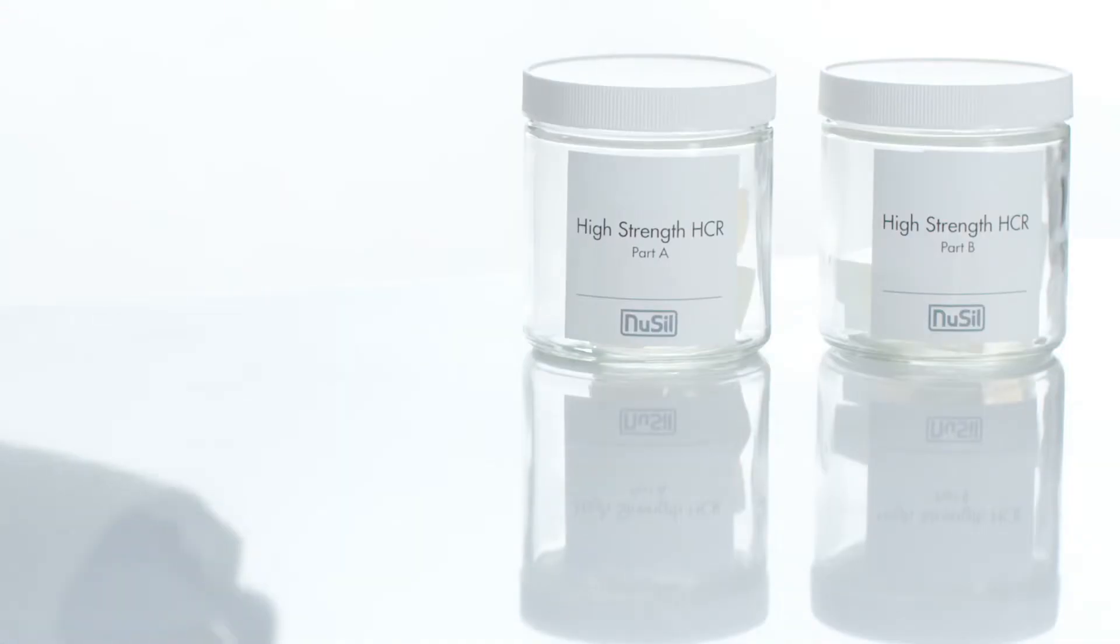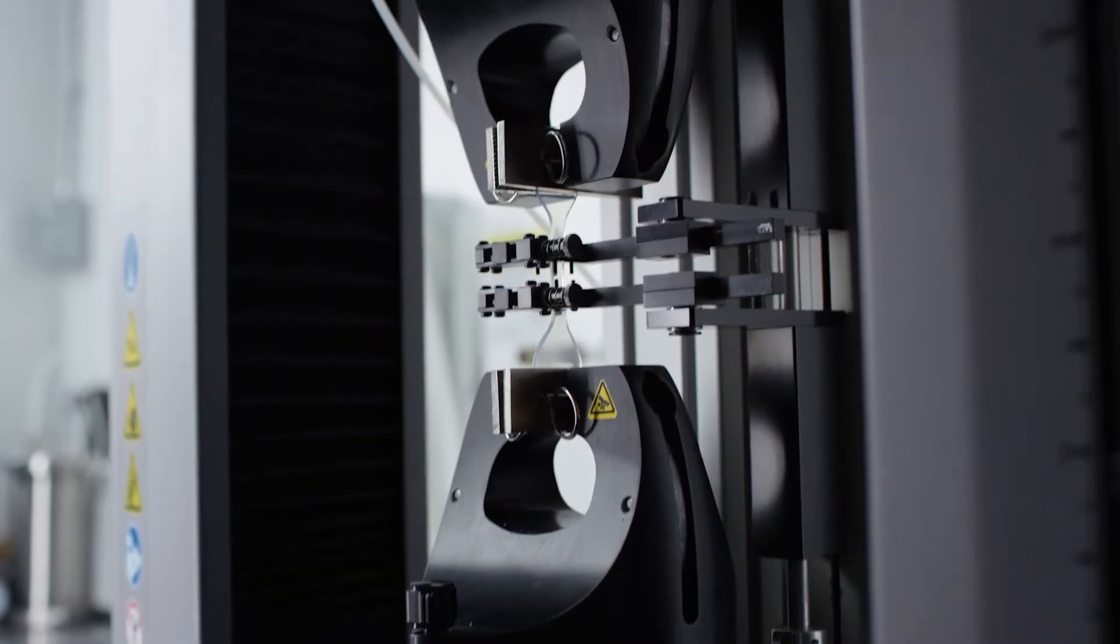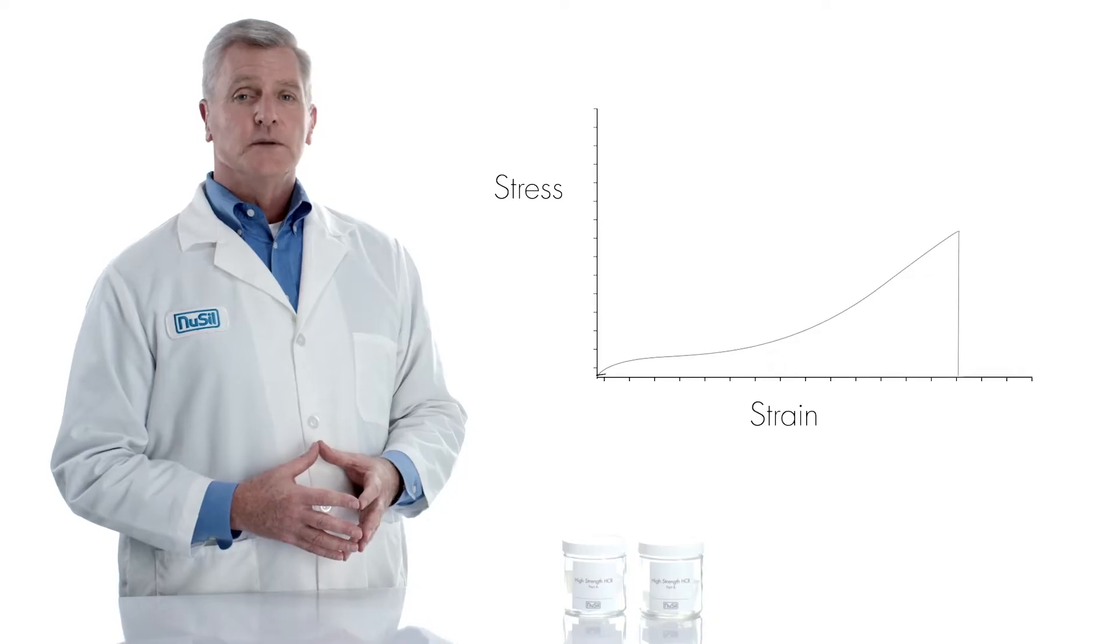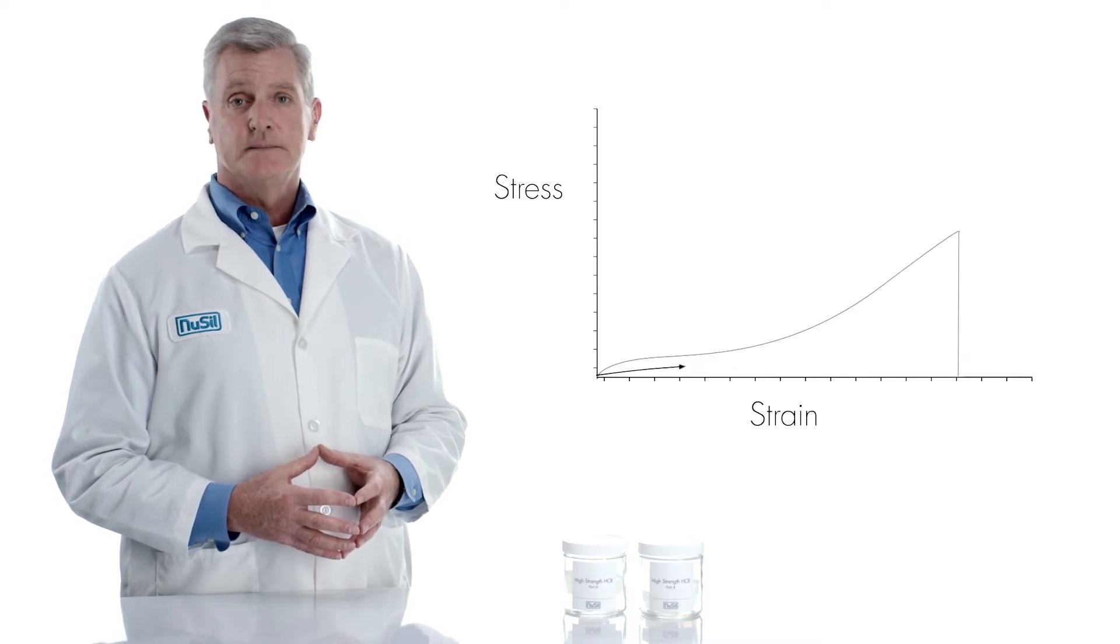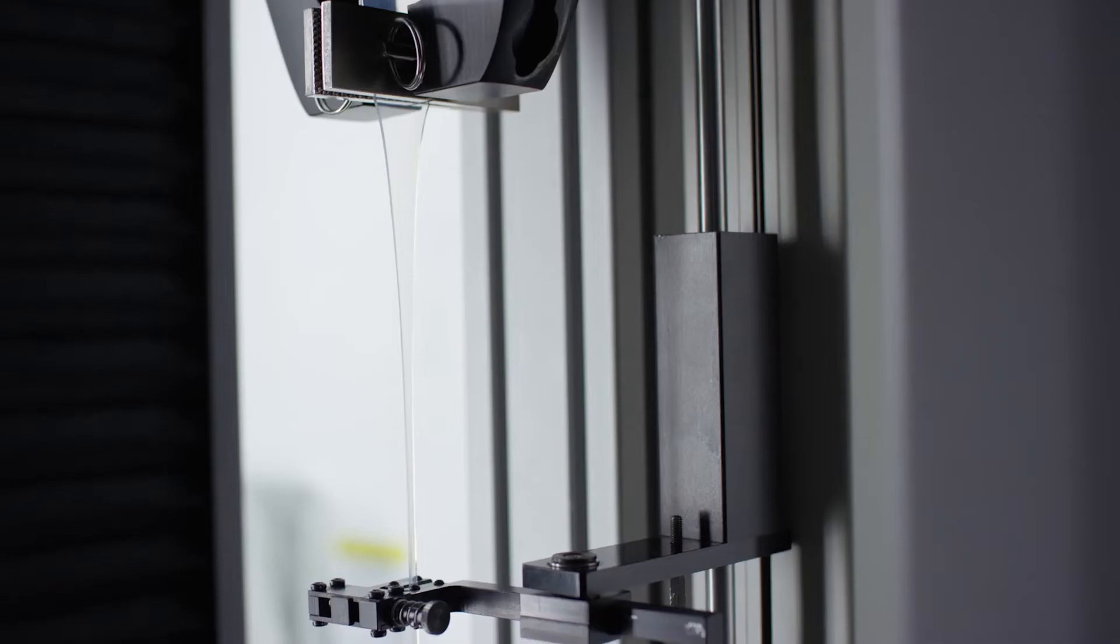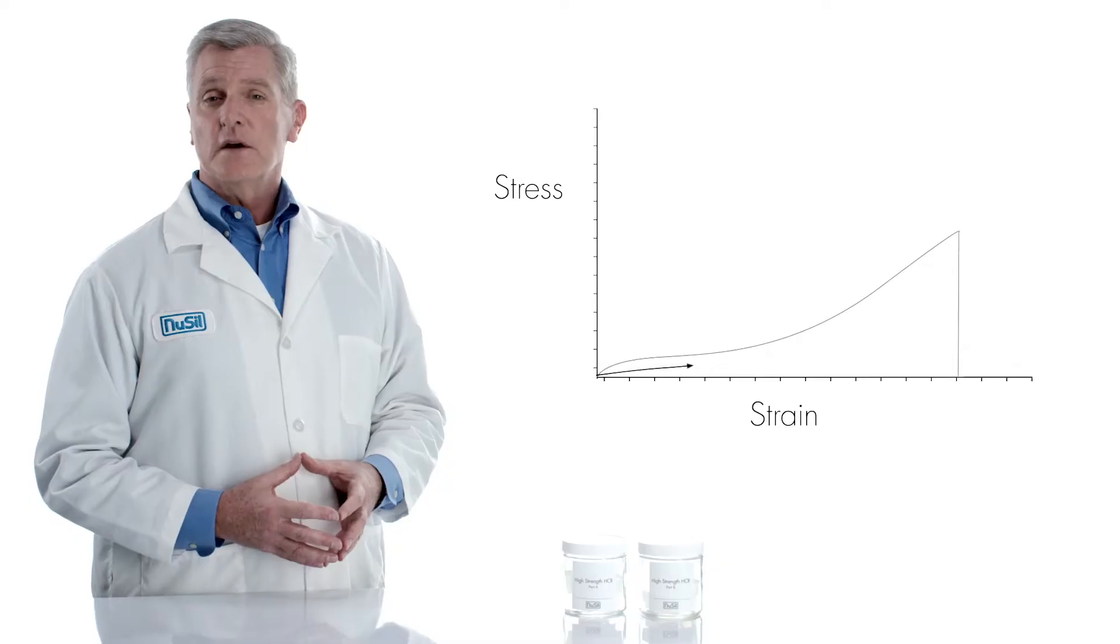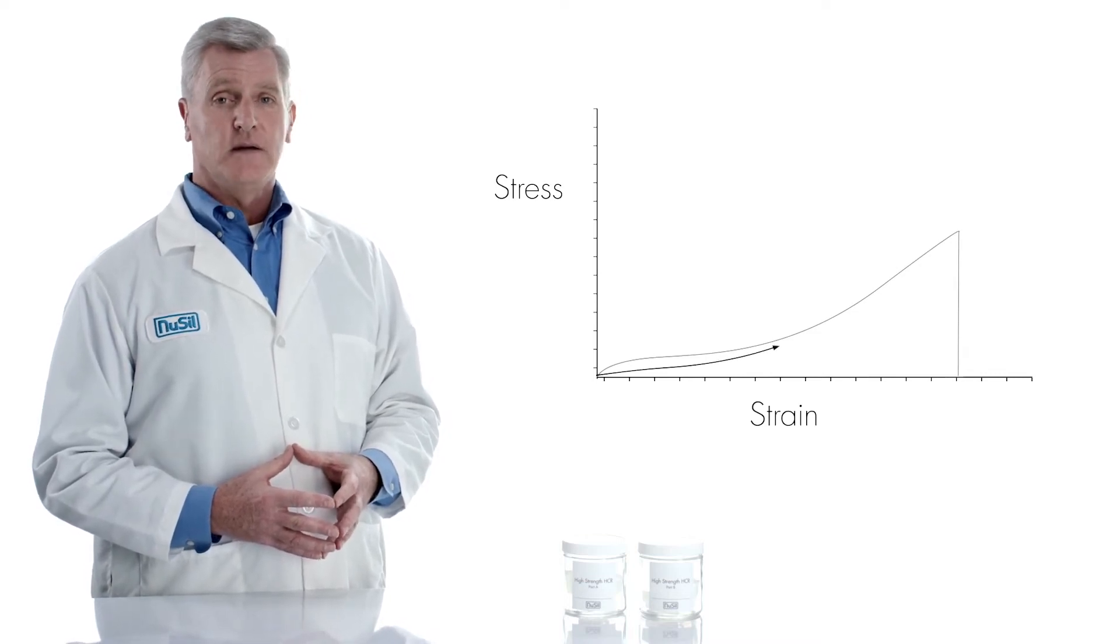But now let's test our new high strength platinum cure HCR. As this material is stretched you'll notice a much lower slope through the first 500 percent elongation. This indicates the material has a lower modulus or is much more pliable. As the elongation increases the curve does not flatten as we saw before which means there's minimal creep type behavior.